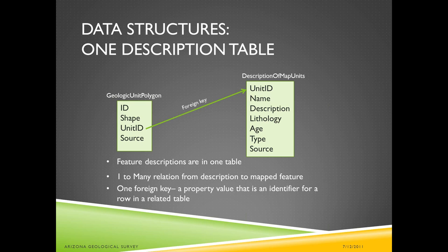In this setup, feature descriptions are in one table with a one-to-many relationship between the description and the map features. The map features are the lines and polygons in your map — the polygons probably represent outcrops of geologic units, and the lines are faults and contacts. This is a slightly more complex structure, but it allows you to have all your unit descriptions in one table, and this is the pattern that NCGMP-09 uses.